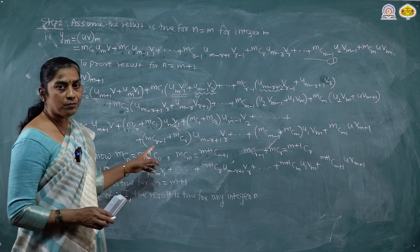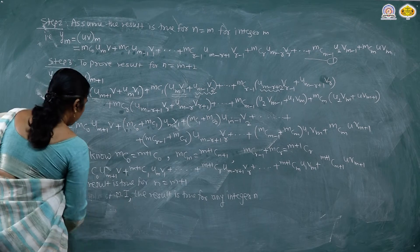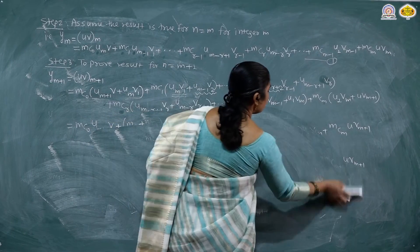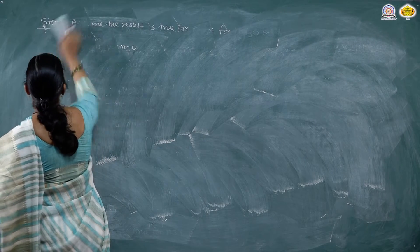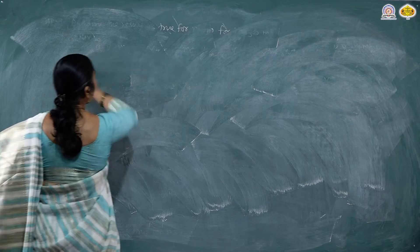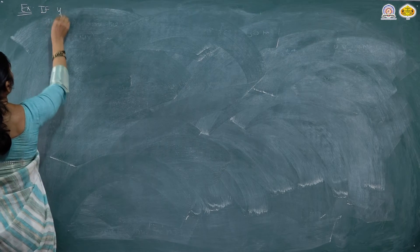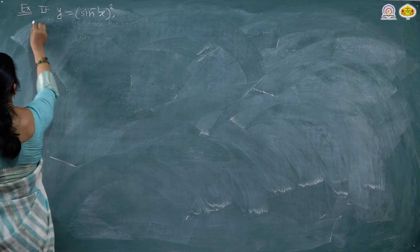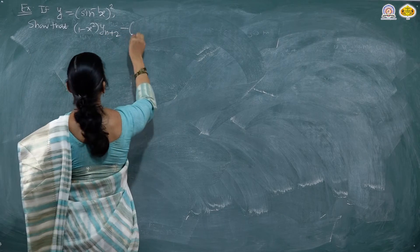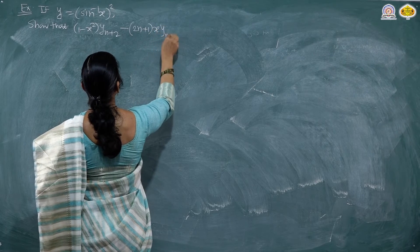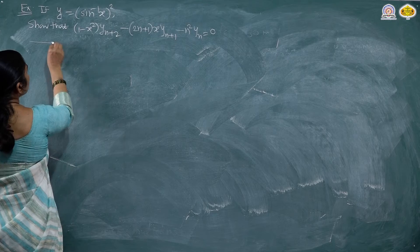Thus we have proved Leibniz theorem, which gives the nth derivative of the product of two functions u and v. To prove the theorem we used mathematical induction. Now it can be used to solve examples. Consider the example: if y is equal to (sin⁻¹x)², show that (1 - x²)·y(n+2) - (2n+1)·x·y(n+1) - n²·yn equal to 0.